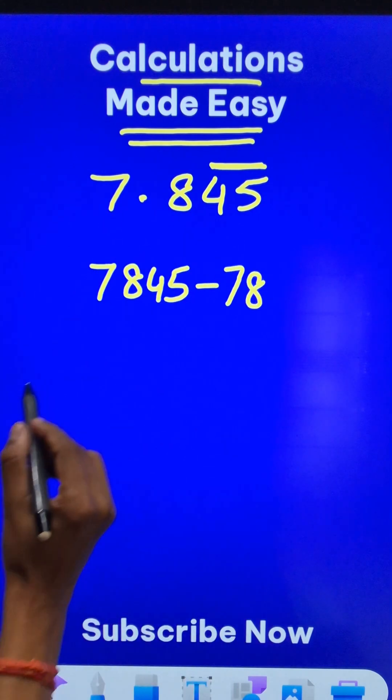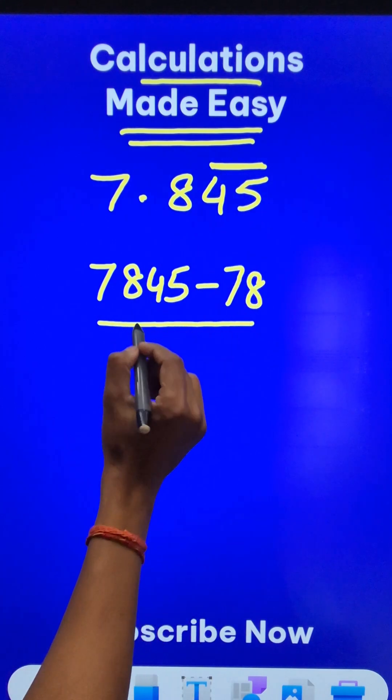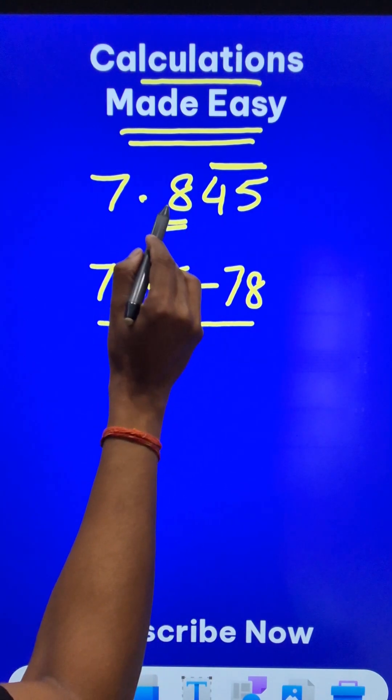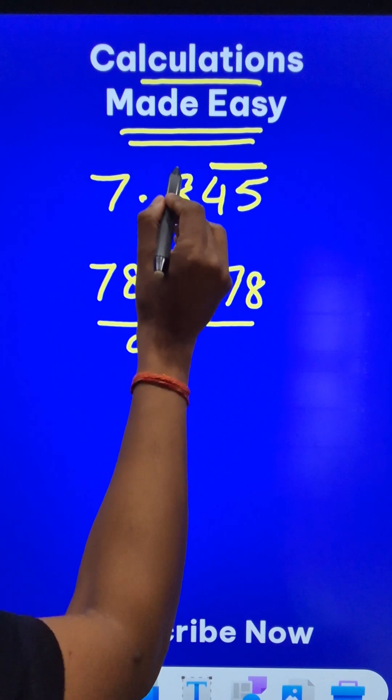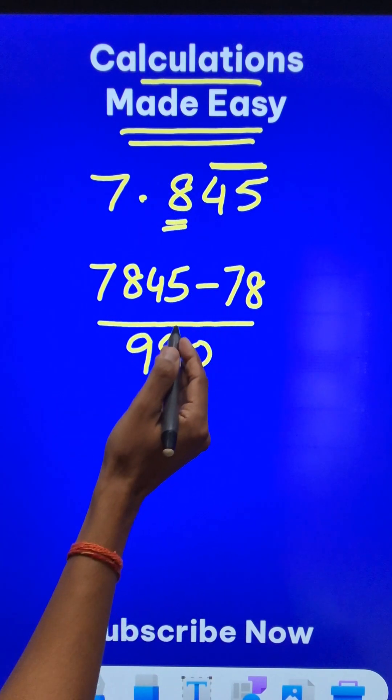So subtract 78 from this. In the denominator, very important, the bar is over two digits, so we will put two 9's. After the decimal we have a digit with no bar, so we put a 0. Now just reduce it to the lowest form.